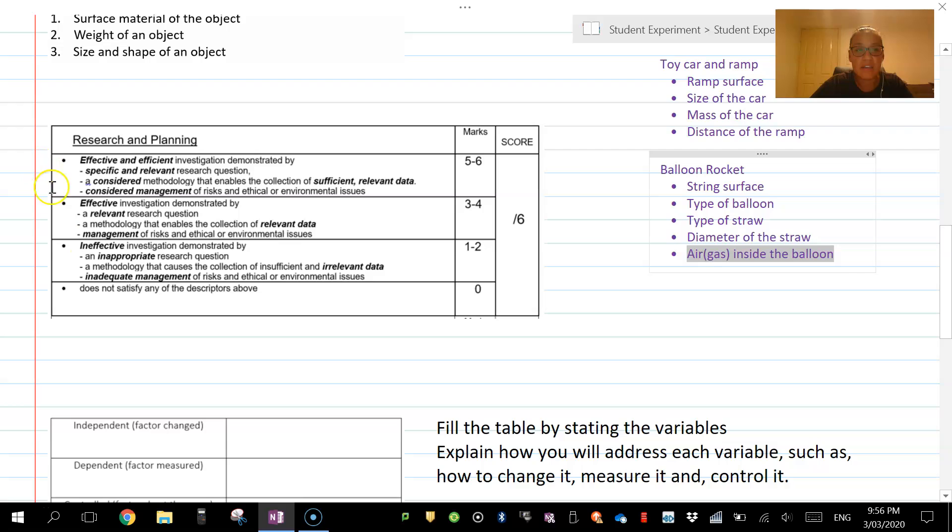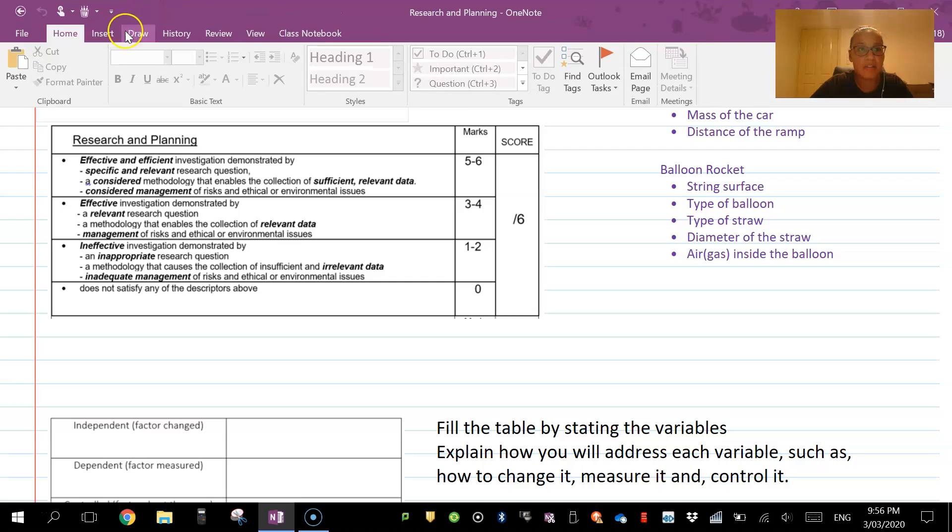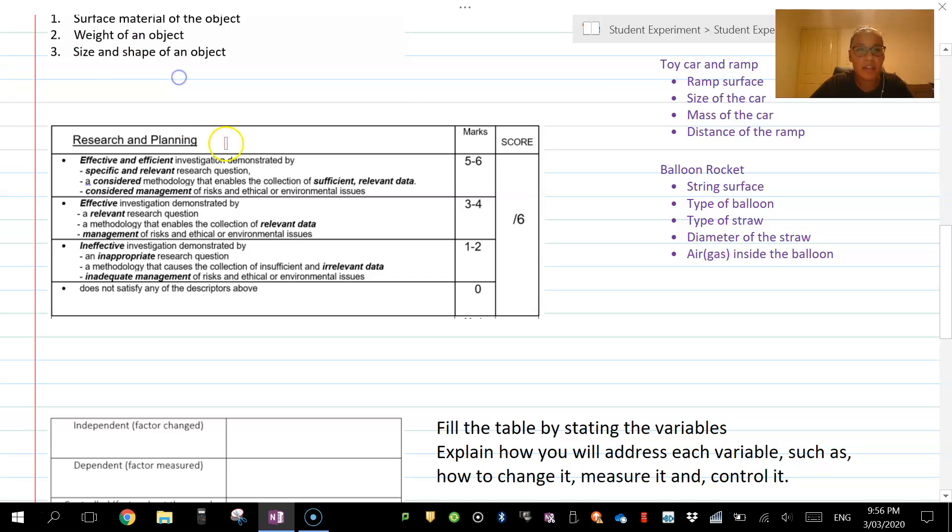You can see here, this is from your criteria sheet, explaining where you get your marks from. What we're going to be looking at is this process here. We are looking at this part here—it's specific and relevant or relevant and inappropriate research question.